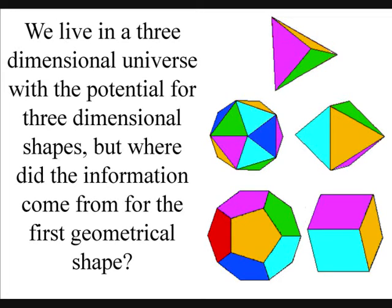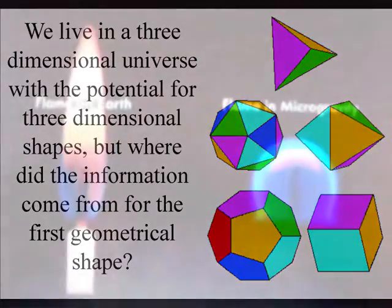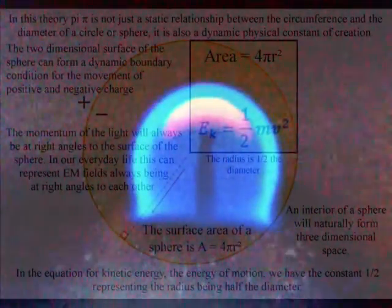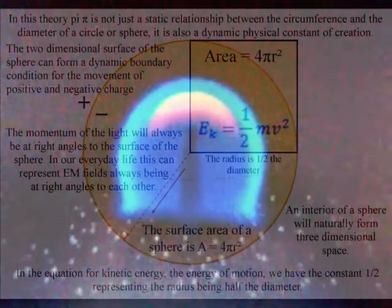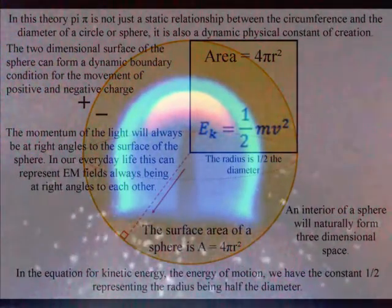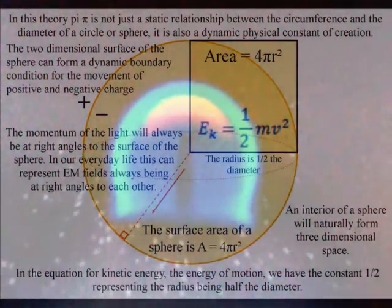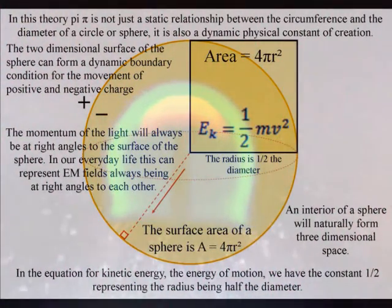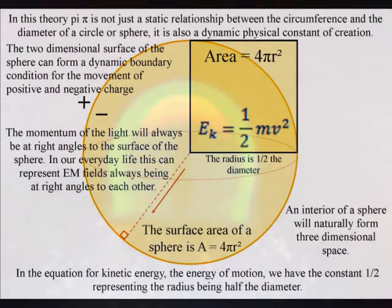We live in a three-dimensional universe with the potential for three-dimensional shapes, but where did the information come from for the first geometrical shape? In this theory, information is formed by a natural geometrical process of energy exchange. This is a very simple process that we can actually see unfolding in these images from the International Space Station, with light in the form of a candle flame in zero gravity.